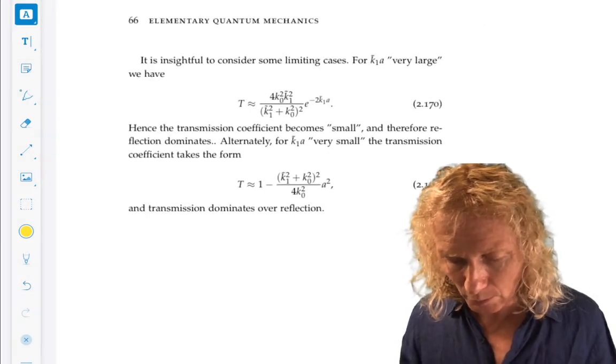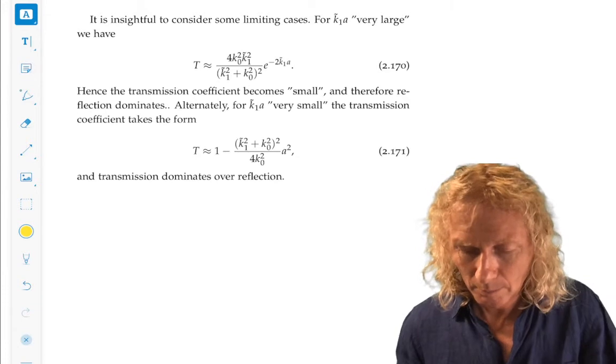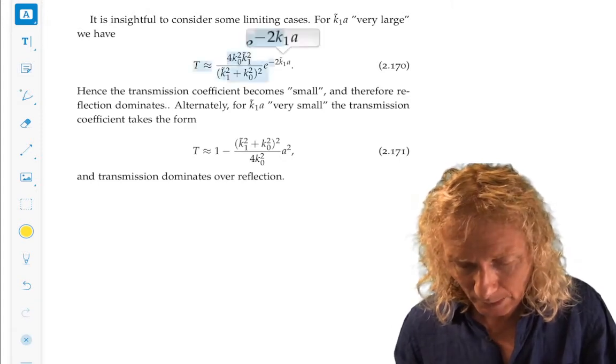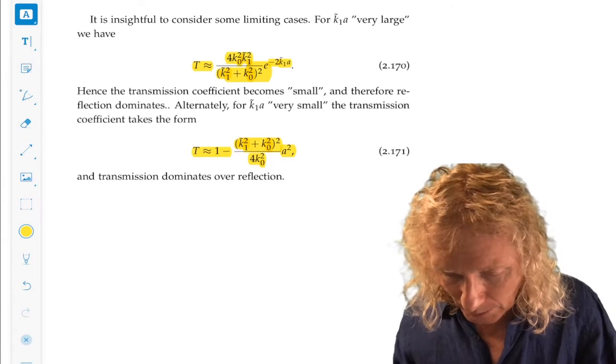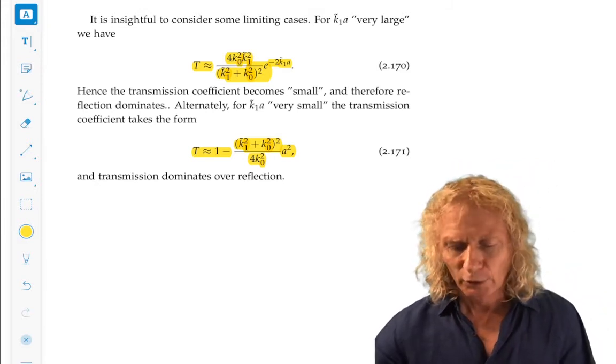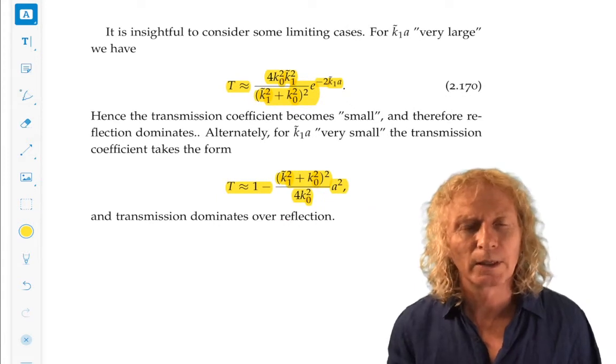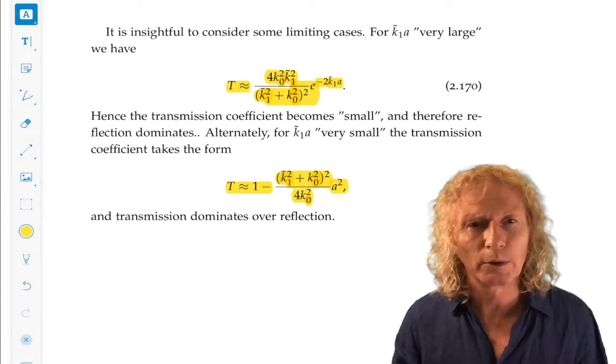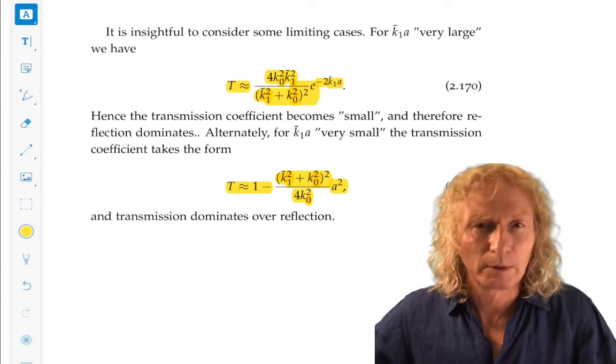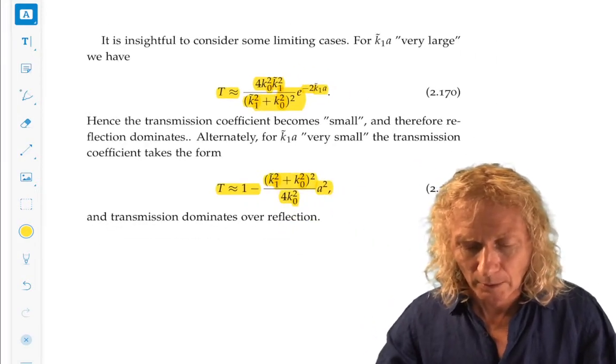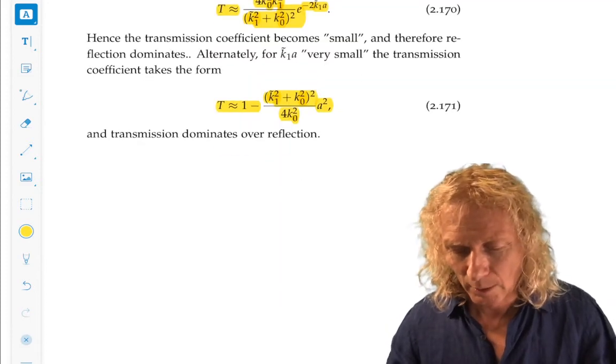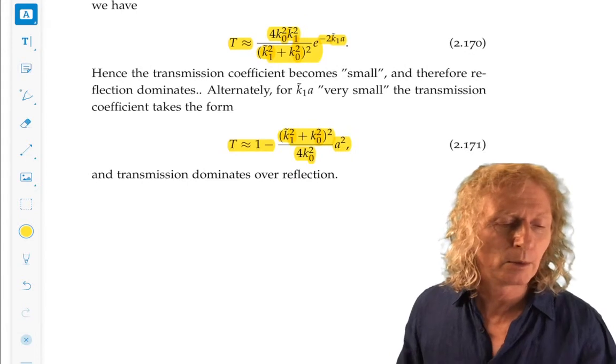You can check that R plus T, reflection plus transmission, equals one. There's a few other things you can do that I'm not going to go through in detail here, but they may come up in certain cases. You can look at limiting cases and what the reflection and transmission coefficient look like for certain combinations of the parameters. The step potential where the step is reversed and it becomes a ditch is an interesting one that we will look at.